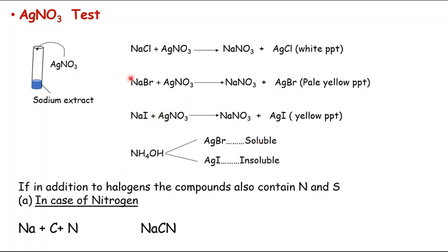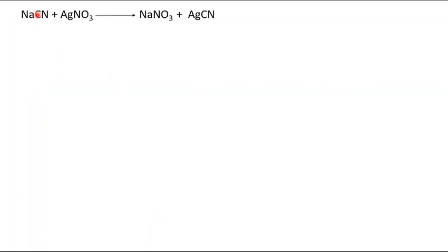Besides halogens, if the organic compound also contains nitrogen or sulfur, there is an interference problem. If nitrogen is present in the organic compound, sodium fuses with nitrogen and carbon to form sodium cyanide (NaCN). So besides sodium chloride from the halogen, we also get sodium cyanide. Sodium cyanide can react with silver nitrate to give silver cyanide, which is also a white precipitate, causing confusion.